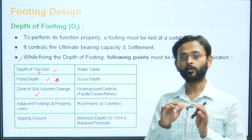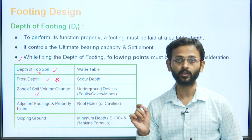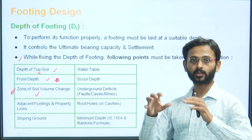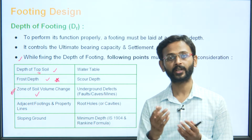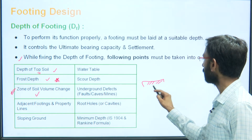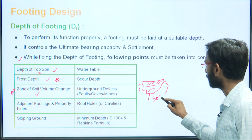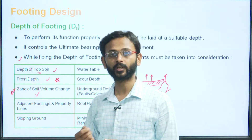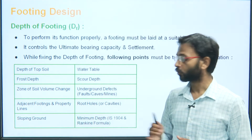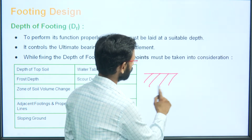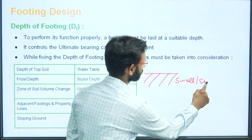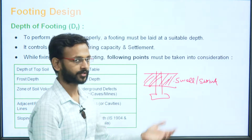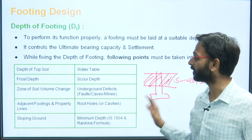Next is the zone of soil volume change. An important factor that comes to mind here is black cotton soil, found in Maharashtra. This zone is very important because when rain happens, this soil absorbs water and swells. If the foundation is in this zone, the swelling soil will raise the footing upward, causing distortion in the structure. The footing must always be placed below the zone of swelling and shrinkage.